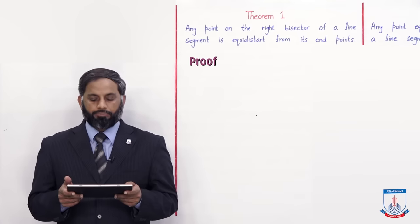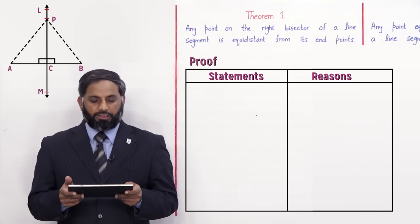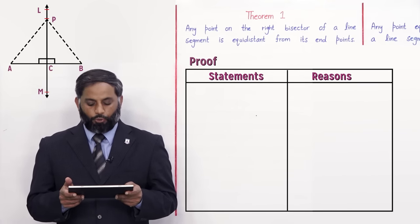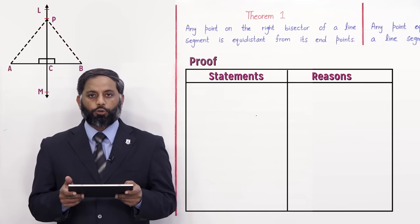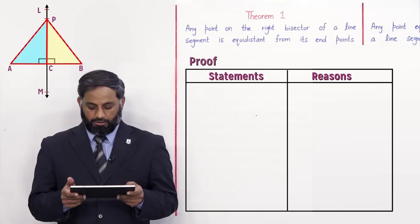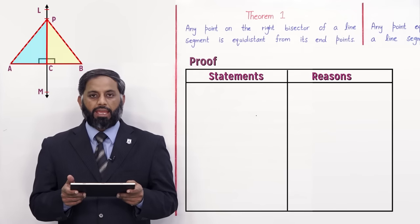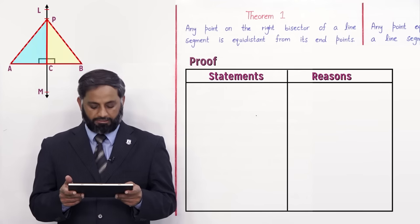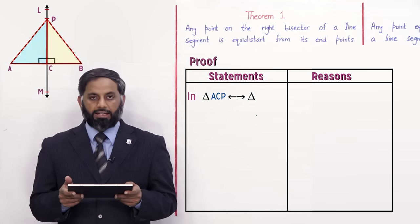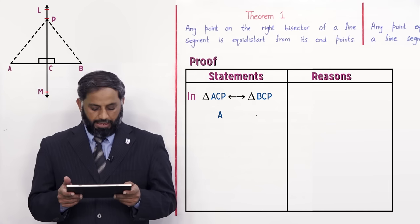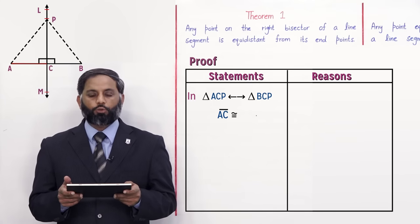Now when we joined point P to A and B, we get two triangles: triangle PAC and triangle PBC. We take their correspondence: in triangle ACP correspondence to triangle BCP. AC is congruent to BC, and the reason is given.